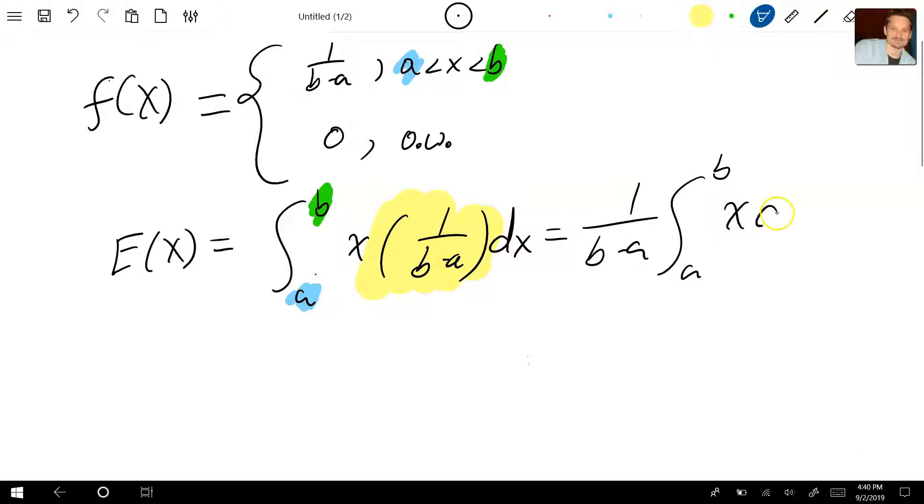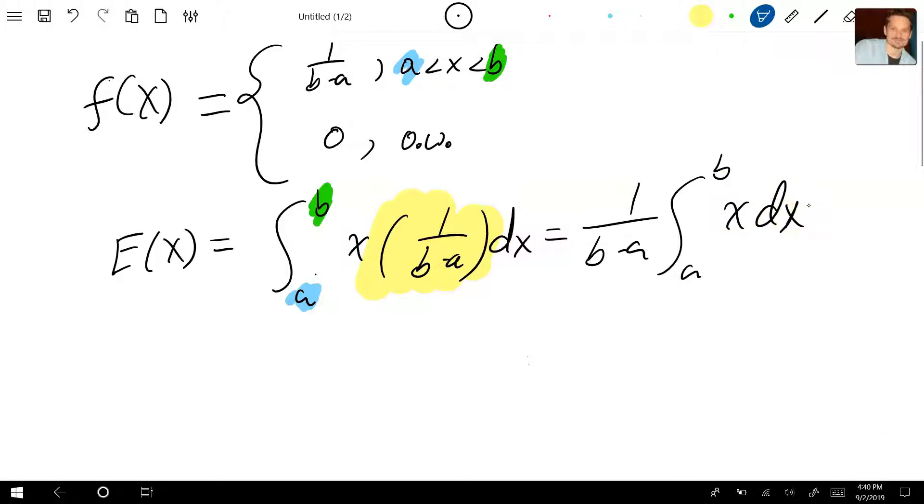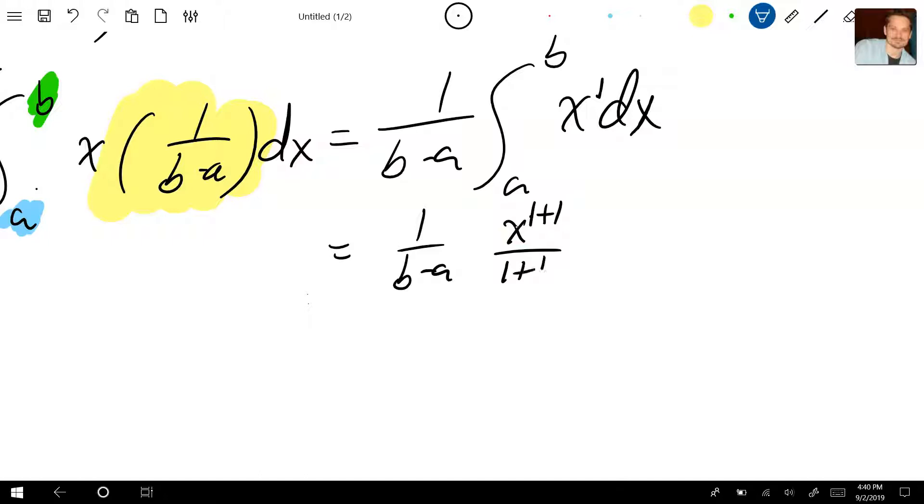We can do this. This is a relatively elementary one. Let's focus on this first. When we say x, that really just means x to the first. That's important to understand because now we can apply the power rule. So that will be 1 over b minus a, and then here it's going to give you x to the 1 plus 1 over 1 plus 1.